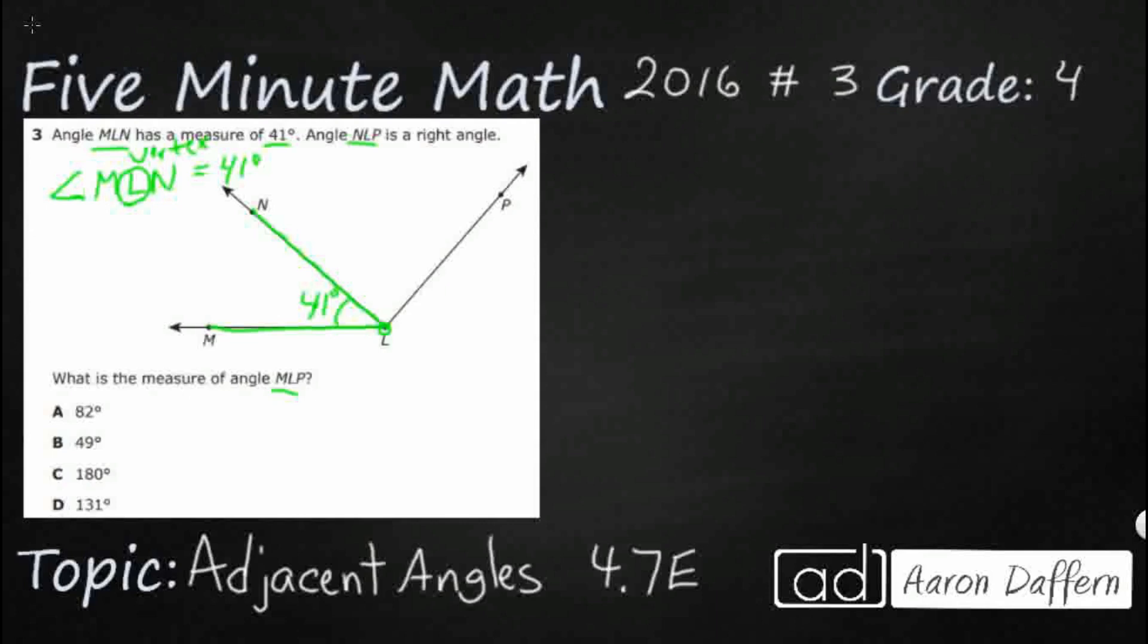And then they give us angle NLP. So, L again is our vertex, but we're going to start with N. We're going to go down to L, but now we're going to go up here to P. So, from N to L to P, it's a right angle. So, I'm going to put a little box right here. Now, what they don't tell us is how much a right angle is. We need to know what a right angle is.